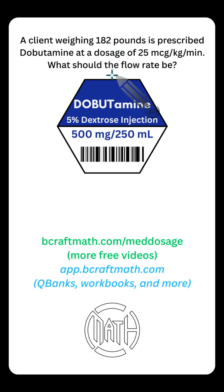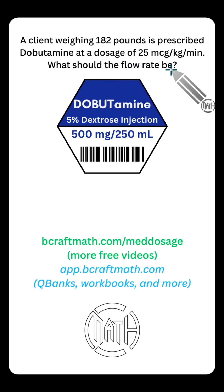Reading over the question, our goal is: what should the flow rate be? 99% of the time when you're asked to find the flow rate, that means how many milliliters per hour. In rare instances you may need to find the drip rate in drops per minute, but here it's milliliters per hour.